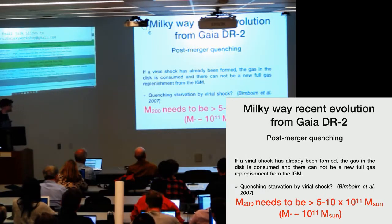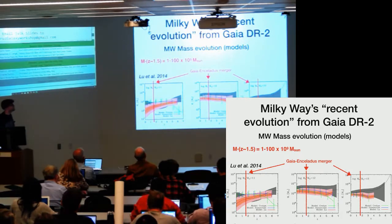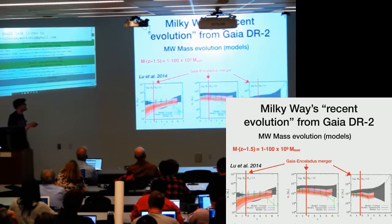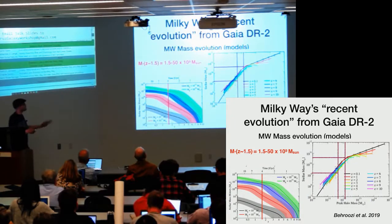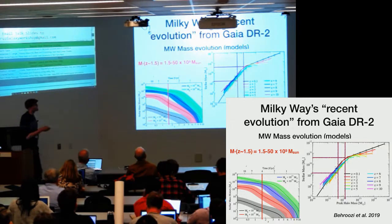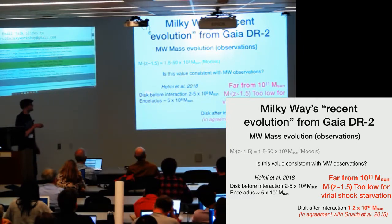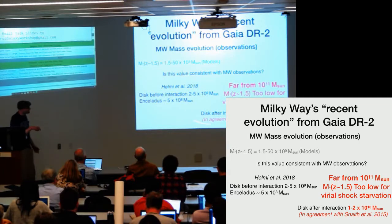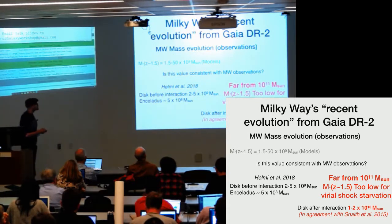We know that probably the galaxy is much less massive. Looking at theoretical models from Nuza 2014, the mass of the Milky Way at redshift 1.5 — when the giant Gaia-Enceladus merger occurred — would be between 1×10^9 and 1×10^12, which is compatible with a virial shock. But more recent analytical models show we have too little mass for virial shock production. Also, from the same Helmi paper, the derived mass of the disk before interaction, the Enceladus mass, and the mass of the disk after interaction — which is 1 to 2 times 10^10 — is too low for virial shock generation. So this mechanism cannot be one of those that triggered the quenching about 10 gigayears ago.